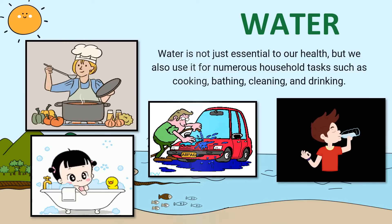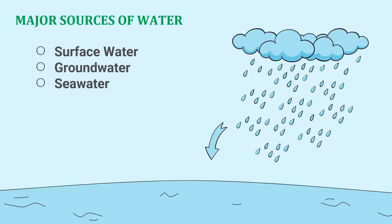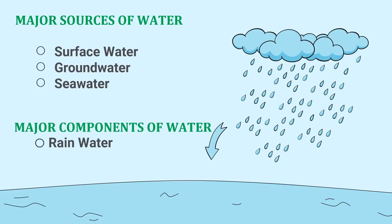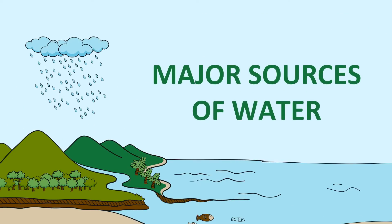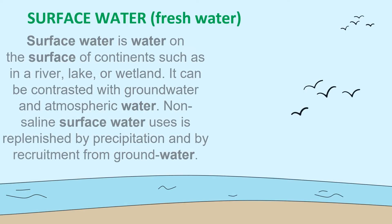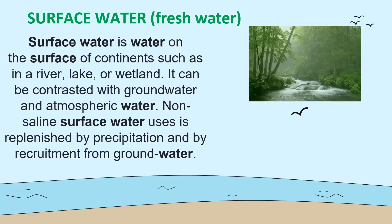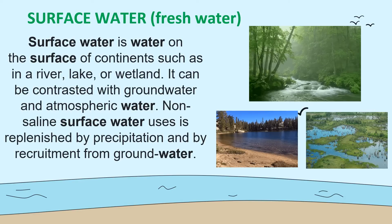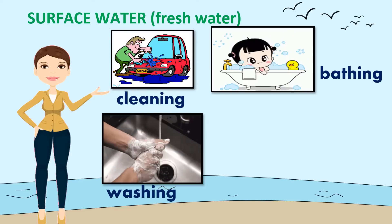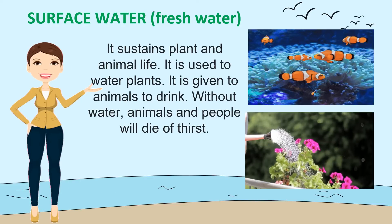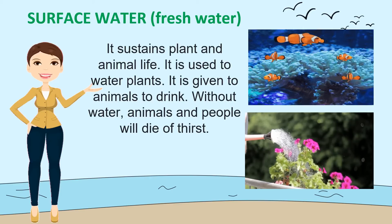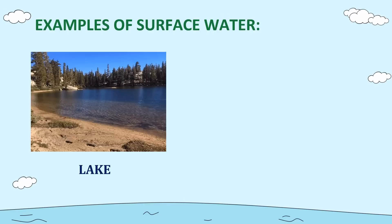The following are major sources of water: surface water, groundwater, seawater, and the major component is rainwater. Surface water, or fresh water, is water on the surface of continents such as in a river, lake, or wetland. It can be contrasted with groundwater and atmospheric water. Non-saline surface water is replenished by precipitation and by recruitment from groundwater. Surface water can be used for cleaning, washing, bathing, preparing food, and other household uses. It sustains plant and animal life — it is used to water plants and given to animals to drink. Without water, animals and people will die of thirst.